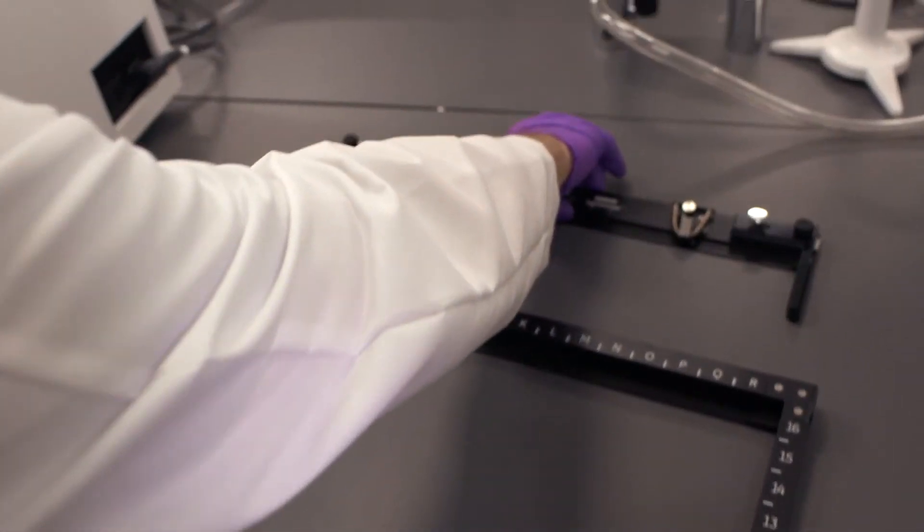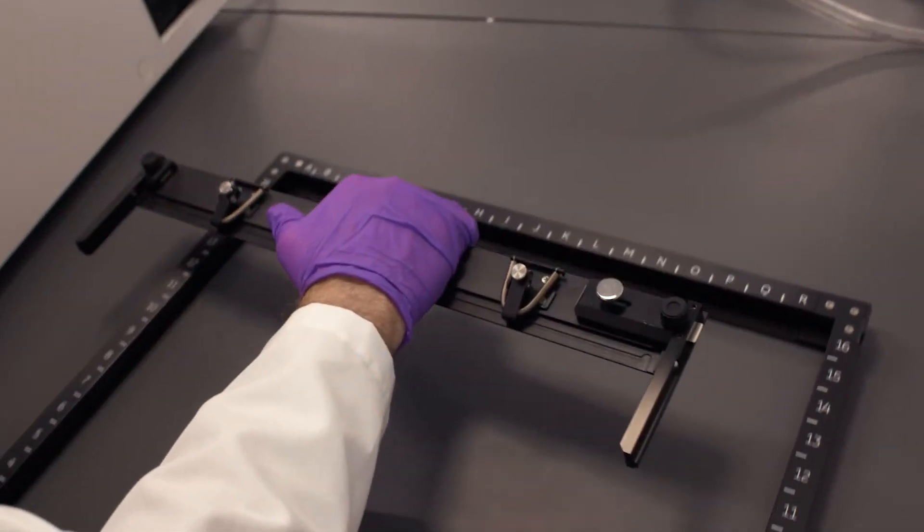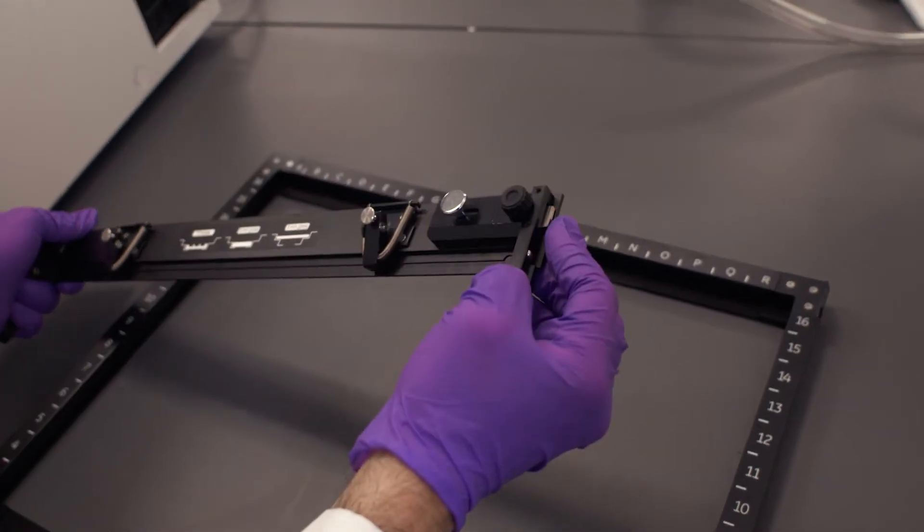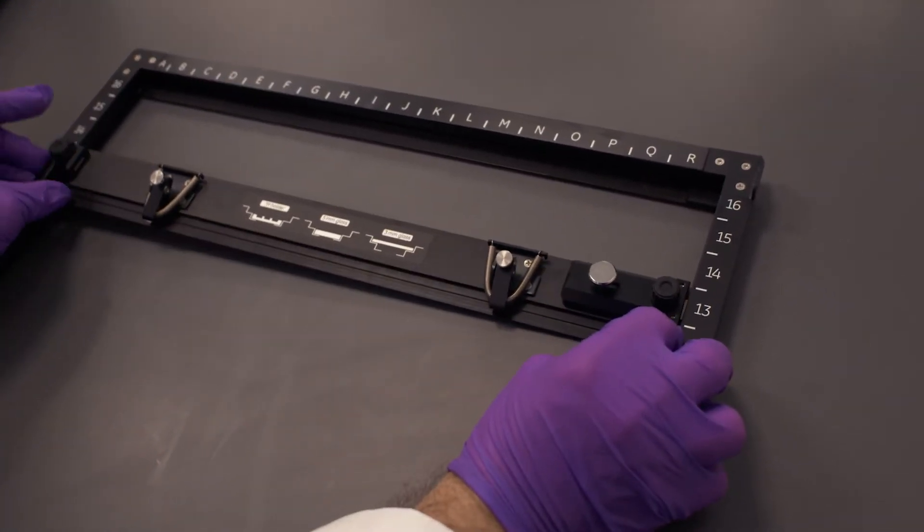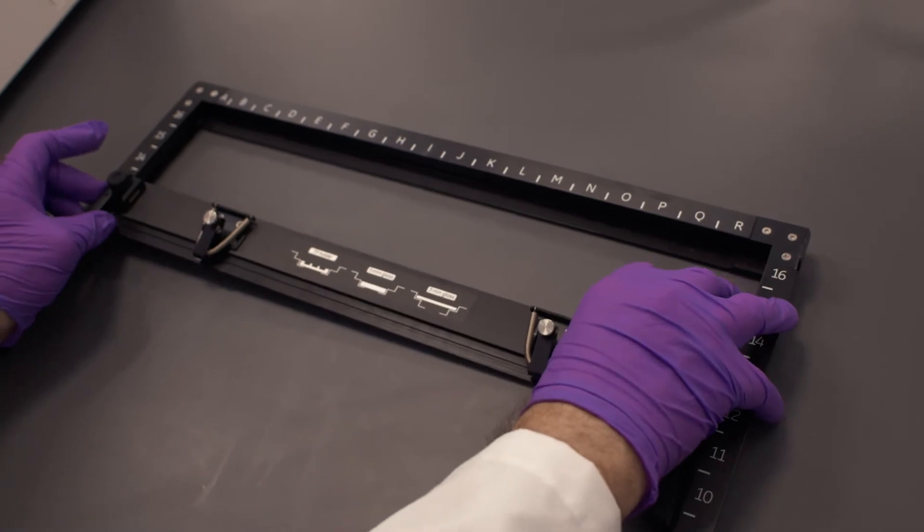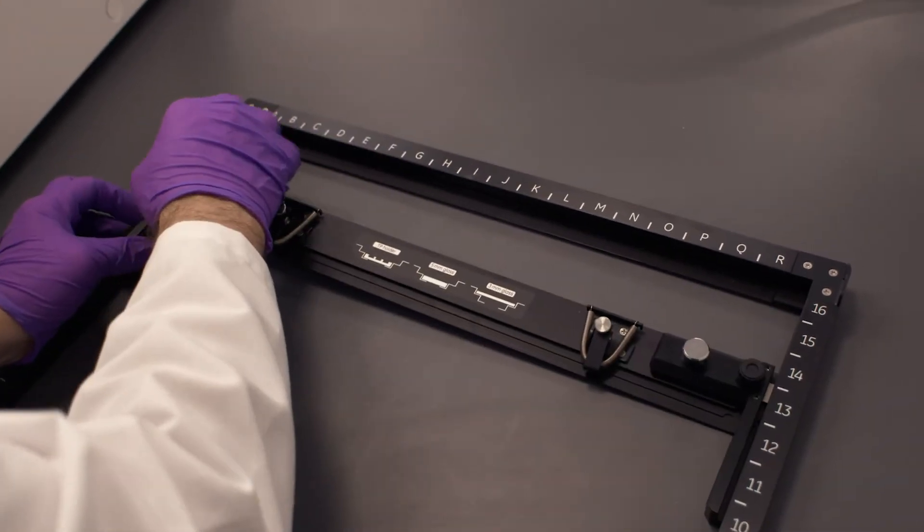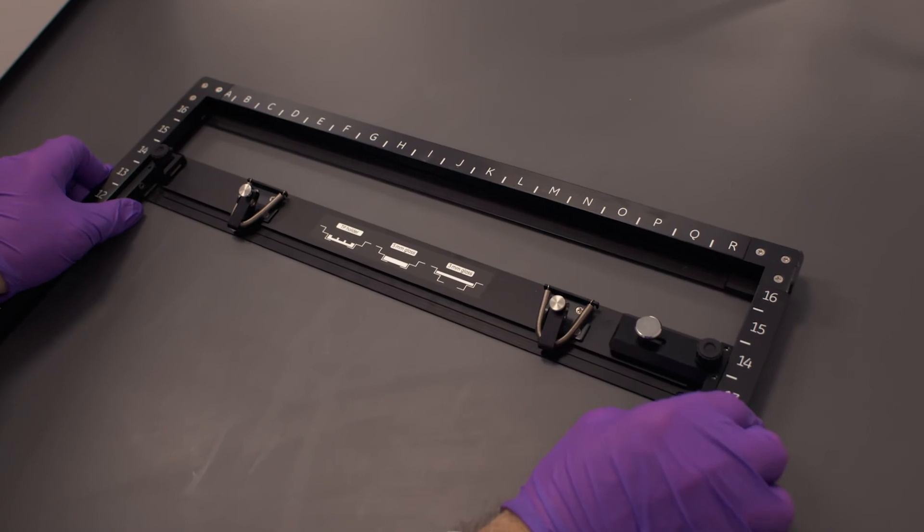We're going to do the same for the top bracket here. This will go in a little bit easier. You'll see on the side here we have a little lip. That will slide in there, and then just push it in a little bit.